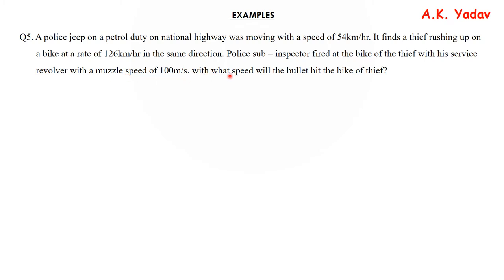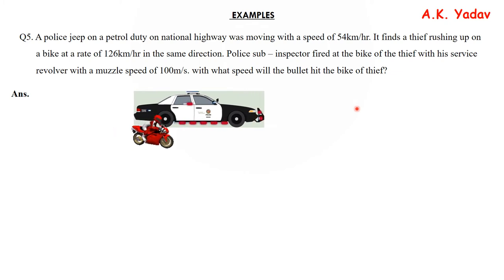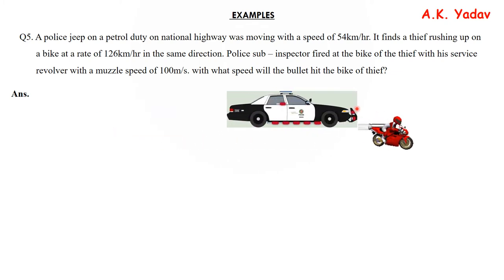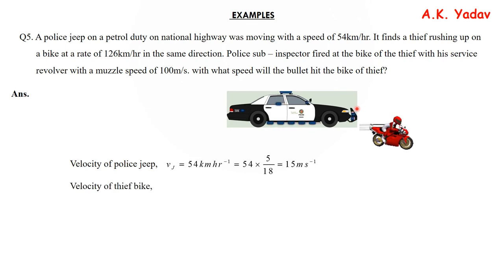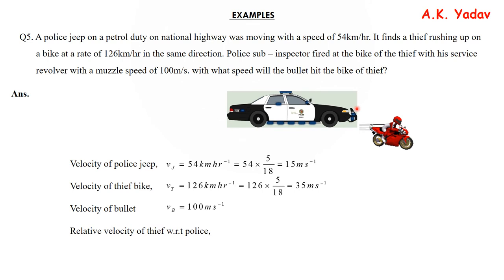Question number 5: A police jeep on patrol moves at 54 km/h and the thief runs at 126 km/h in the same direction. The sub-inspector fires at the thief's bike with a muzzle speed of 100 m/s. Velocity of jeep = 54 km/h = 15 m/s; velocity of bike = 126 km/h = 35 m/s; bullet = 100 m/s. Relative velocity of thief with respect to police = 35 − 15 = 20 m/s (same direction, subtract).